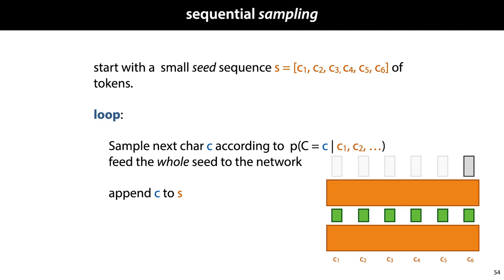Note that again here we have no Markov assumption, so no matter how long the seed grows, we can keep feeding the whole seed to the network, letting it look potentially infinitely far back in the sequence. We'll see some examples of data generated this way after we've explained LSTM networks in the next video.